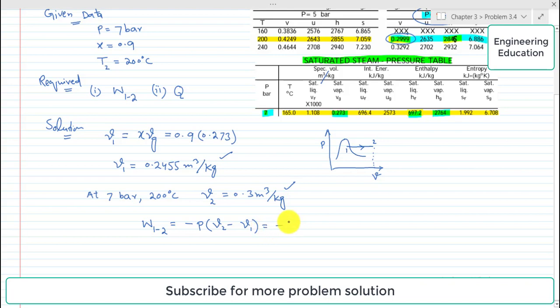So putting the values: minus 7 times 10 raised to power 5, converting bar into Pascal, the value of v2 is 0.3 and the value of v1 is 0.2455. So simplifying this, the work input required is 38.2 kilojoules per kilogram.